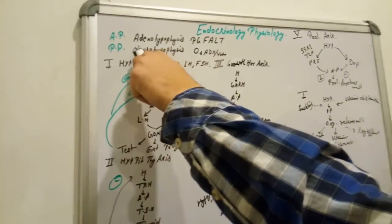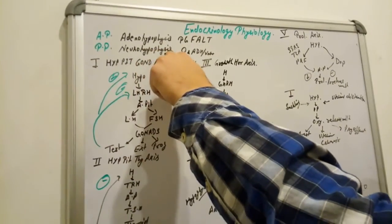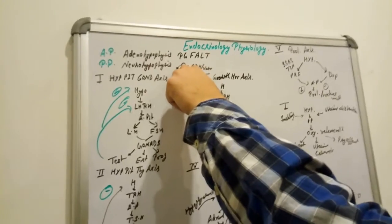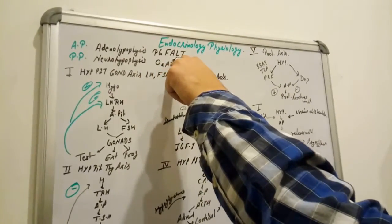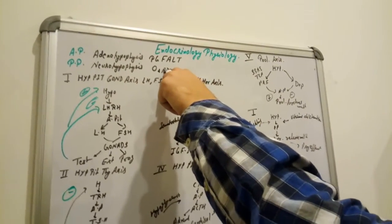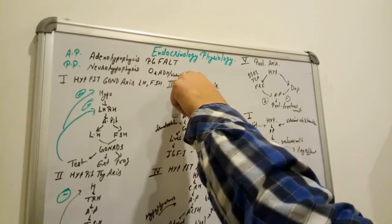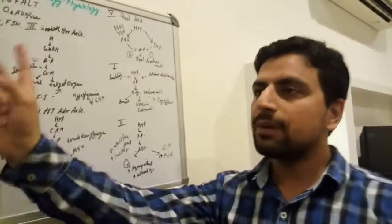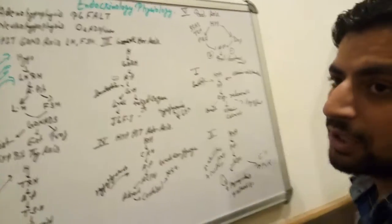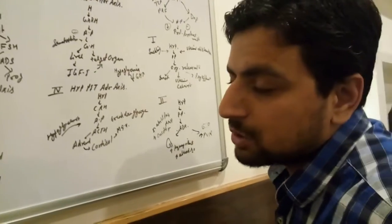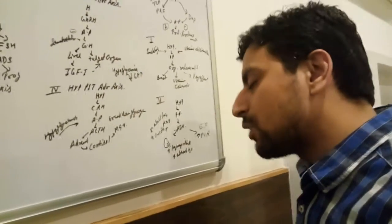The posterior pituitary is named neurohypophysis. O represents oxytocin and ADH — antidiuretic hormone, also known as vasopressin. Only two hormones are secreted by the posterior pituitary. The medial pituitary is also there; it secretes melanocyte stimulating hormone.